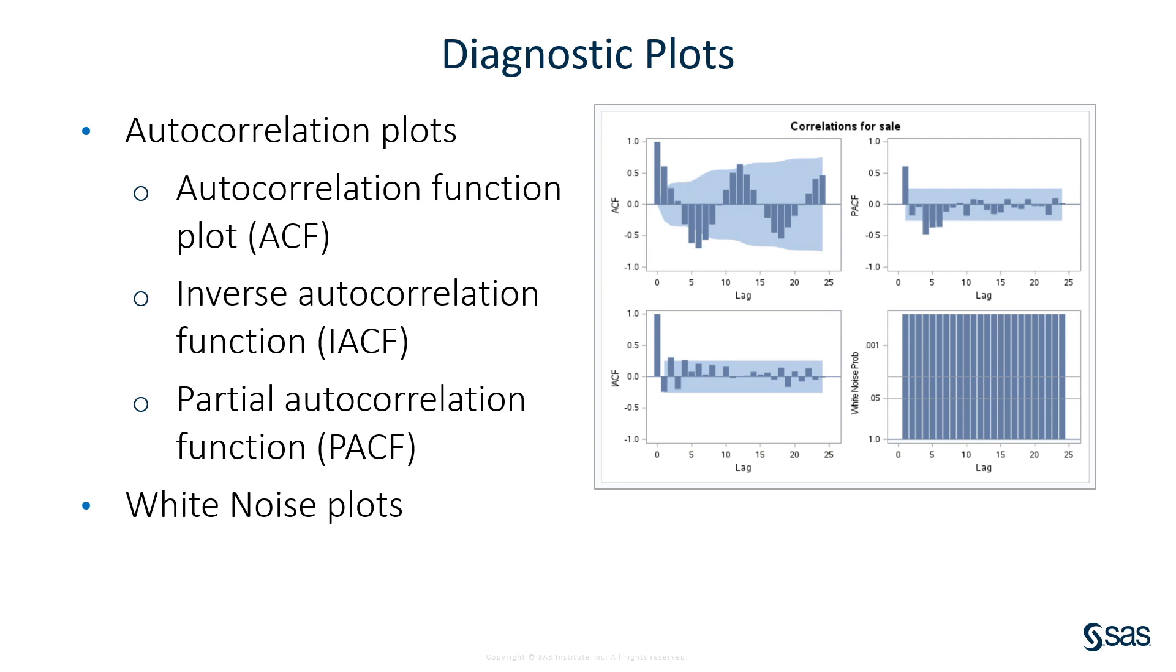So we're going to look at four different types of plots: autocorrelation function plots, inverse autocorrelation function, partial autocorrelation function, and white noise plots. So why do we need these plots? How can we use these plots? Let's remind ourselves a little bit about ARIMA.